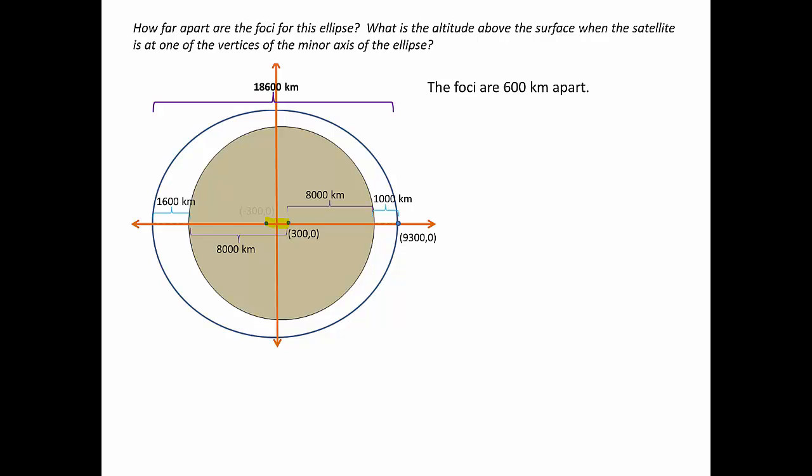The next question: what's the altitude above the surface when the satellite is at one of the vertices of the minor axis? We're talking about the satellite being right here, and if you remember the equation of the ellipse, that's actually about B. We know that A, or half of the major axis, is 9,300.